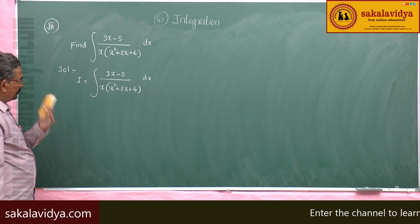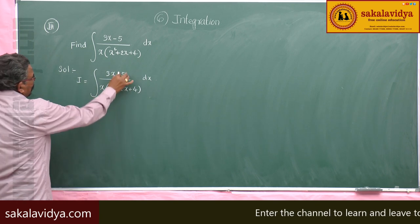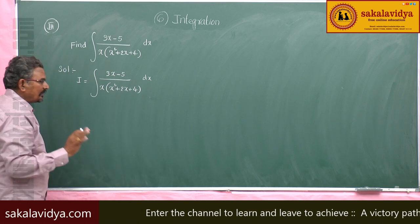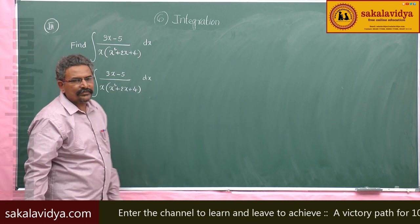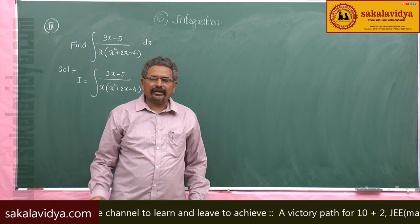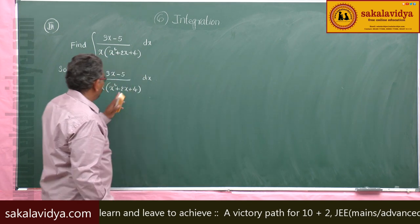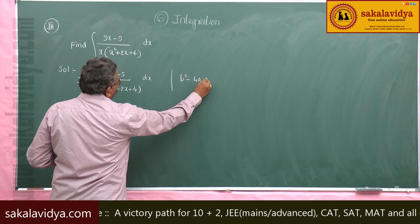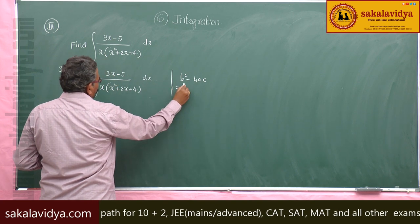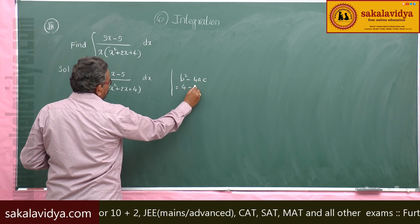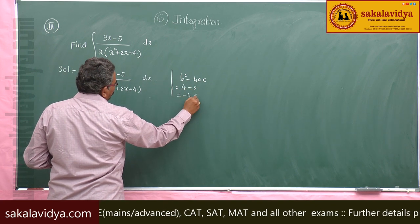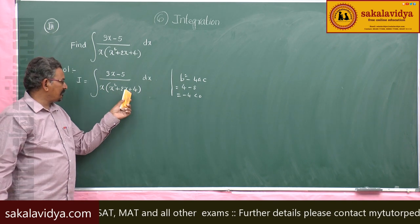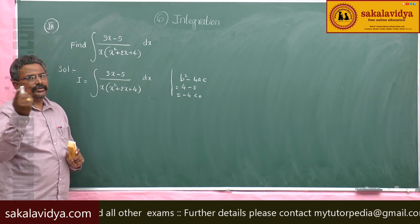Now, for partial fractions, let us see whether x² + 2x + 4 can be reducible or not. Check: b² minus 4ac equals 4 minus 8, which gives minus 4, less than 0. So it cannot be factored — it is of the form ax² + bx + c, which is irreducible.